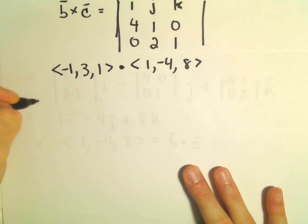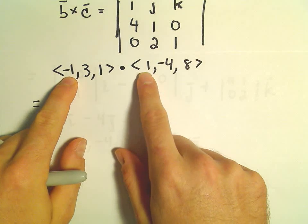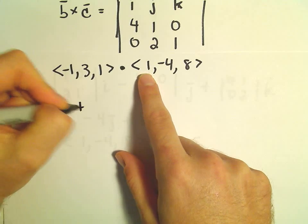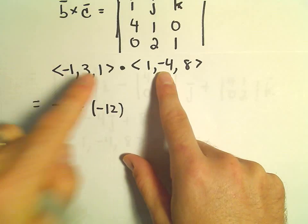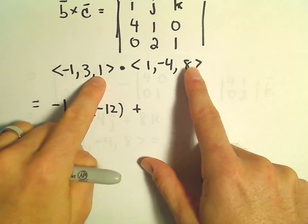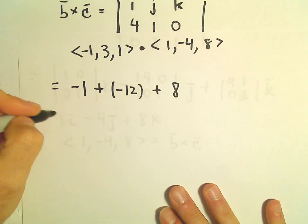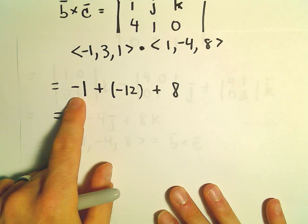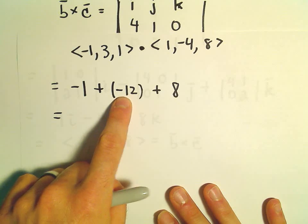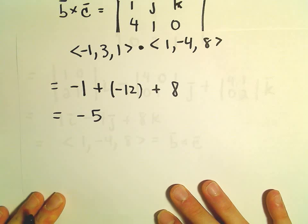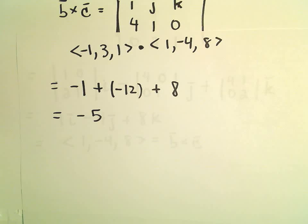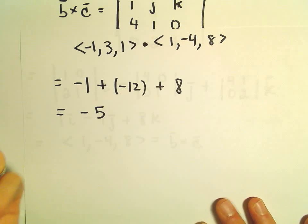Negative 1 times 1 is negative 1. We'll add 3 times negative 4, which is negative 12. Then we'll add 1 times 8, which is 8. So we get negative 1 plus negative 12, which is negative 13, plus 8. That leaves us with the value negative 5.